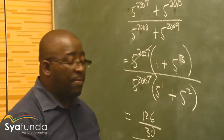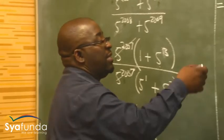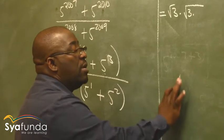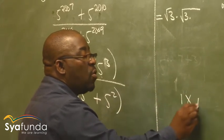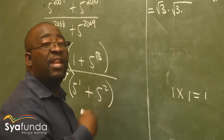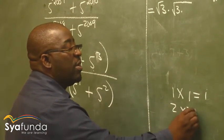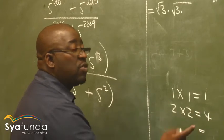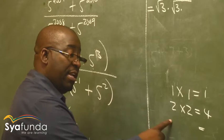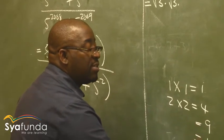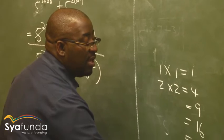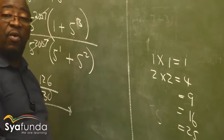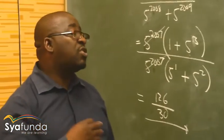Let's remind ourselves what a perfect square is. The smallest perfect square is 1, because 1 times 1 equals 1. The next perfect square after 1: 2 times 2 is 4. The next after 4: 3 times 3 is 9. The next: 16. The next: 5 times 5 is 25, then 36, 49, 64, 81, 100, 121, and so on.